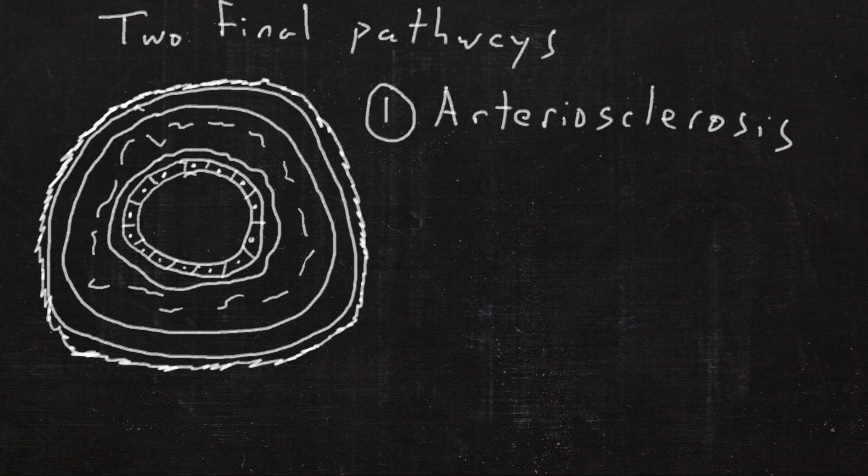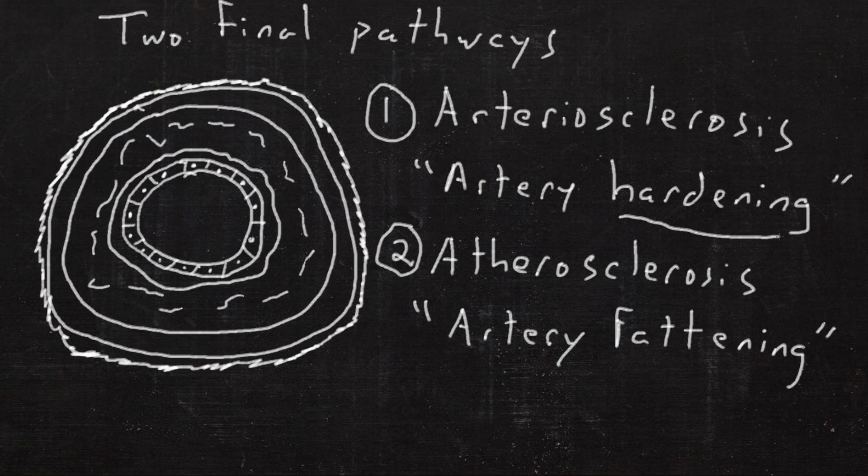They work through two final pathways: arteriosclerosis, which is artery hardening, and atherosclerosis, which is artery fattening.